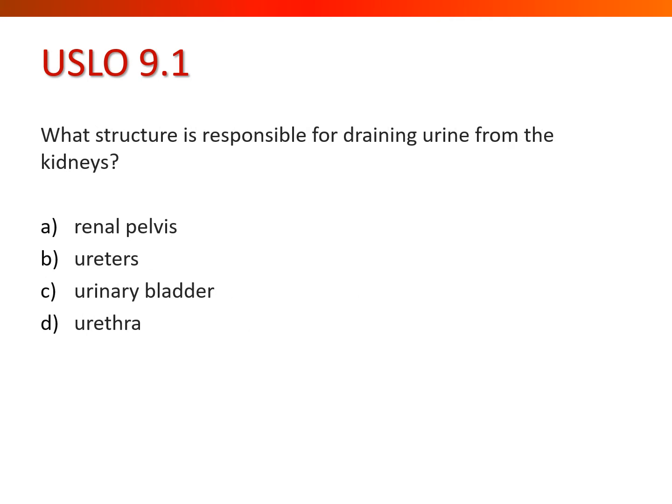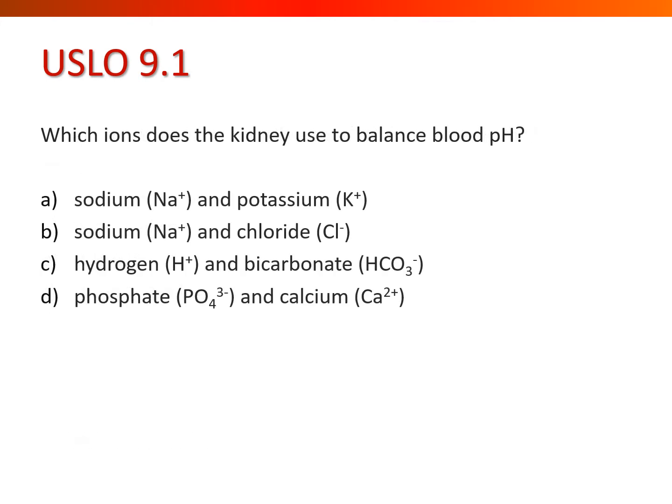What structure is responsible for draining urine from the kidneys? That would be the ureters. Which ions does the kidney use to balance blood pH? Sodium is not used to balance blood pH — it manages blood pressure. Phosphate and calcium are used to bolster bone density. The correct answer is hydrogen and bicarbonate, letter C.